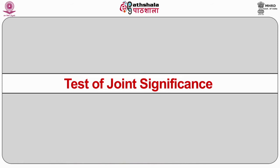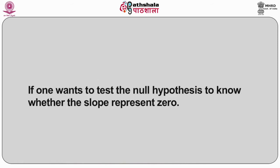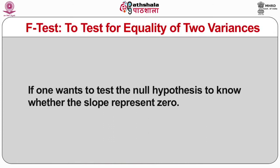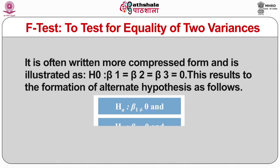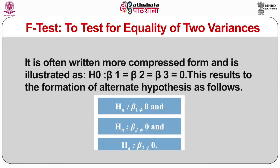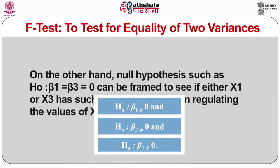Now we take on the test of joint significance. If one wants to test the null hypothesis to know whether the slope represents zero, it is often written in compressed form as: H0: B1 = B2 = B3 = 0. This results in the formation of an alternate hypothesis. This is a test of the null hypothesis to see if the independent variables have a prognostic value or power. The null hypothesis such as H0: B1 = B3 = 0 can be framed to see if either X1 or X3 has such known power when controlling for the values of X2.